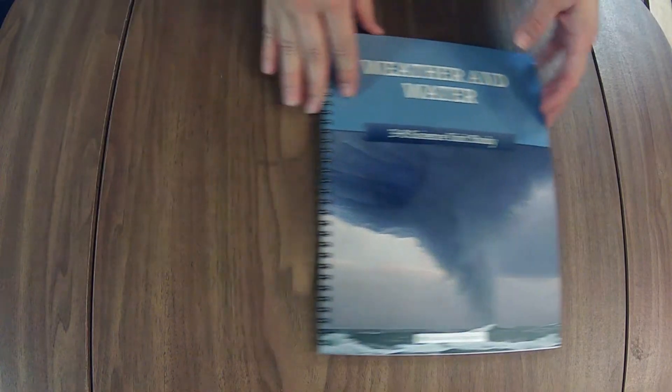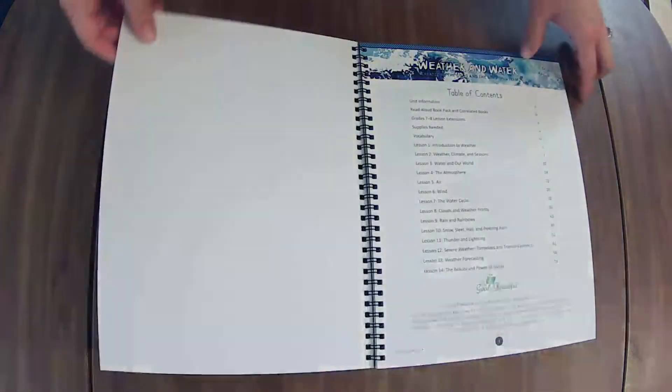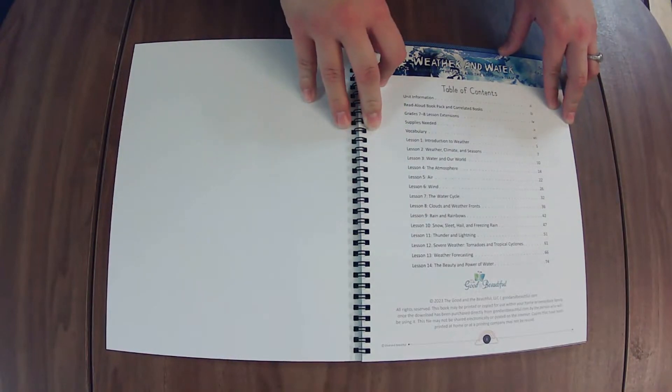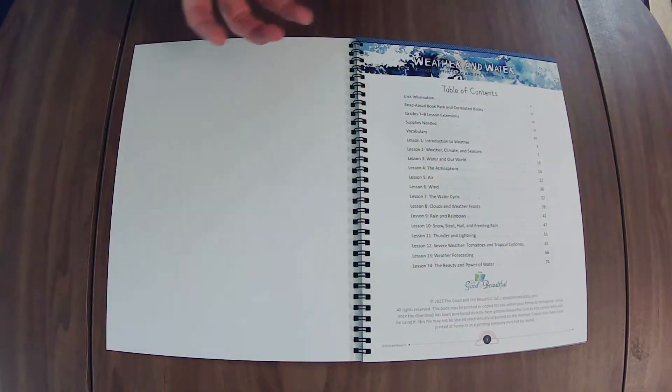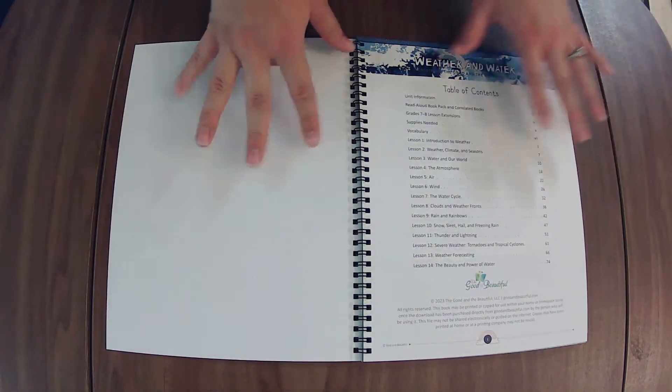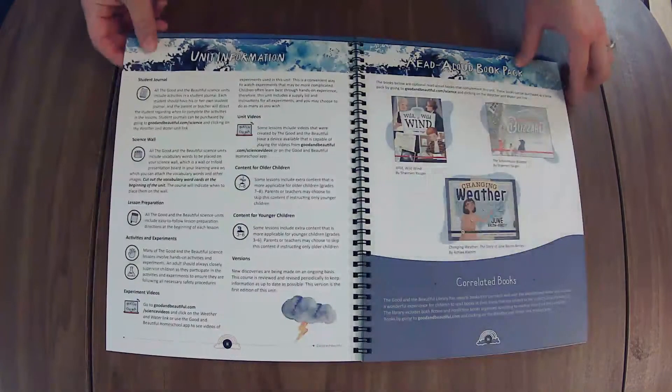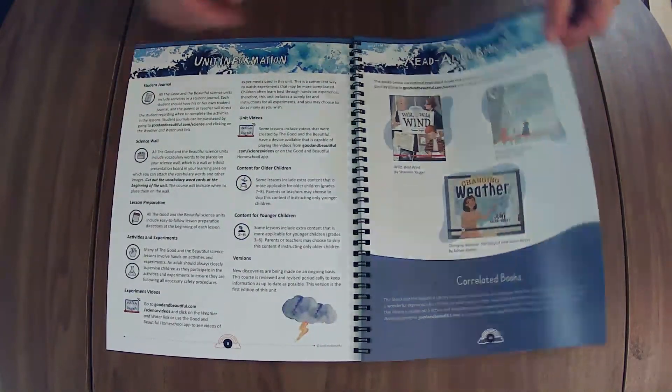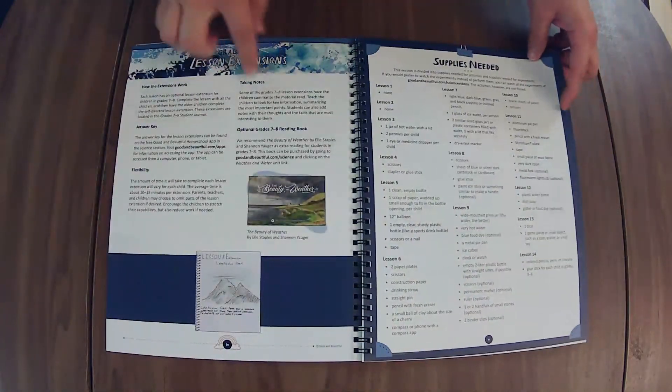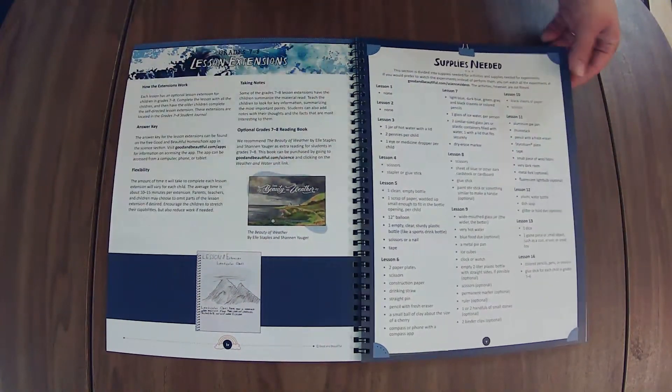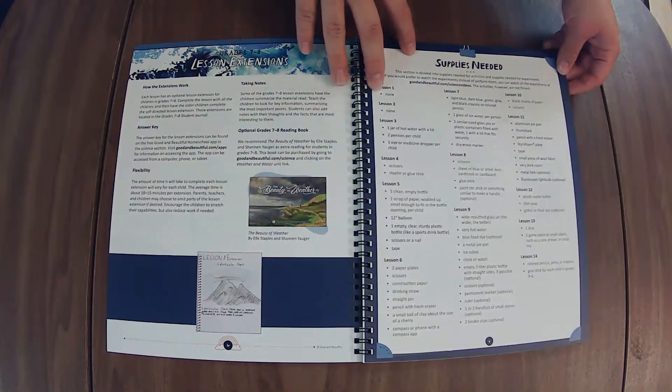The meteorology unit was the first science unit we ever did with The Good and the Beautiful. And then we did water in our world right after that. It's very similar, so I'm glad that they have combined them. We have 14 lessons here. Book pack is three books this time, and then here's the optional reading book for the older kiddos.